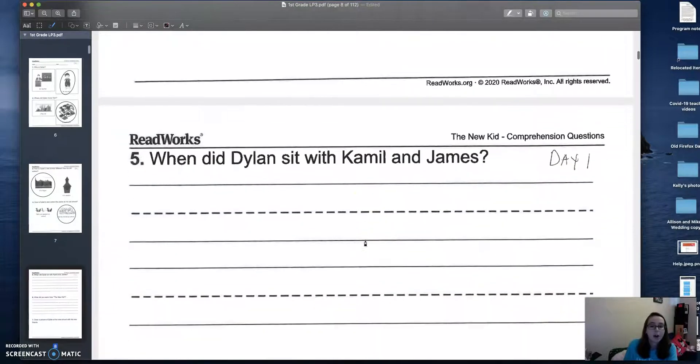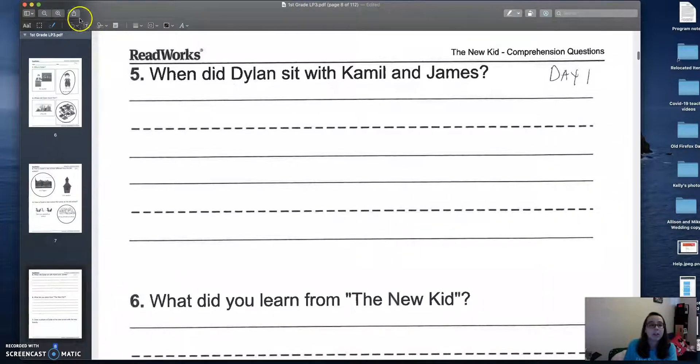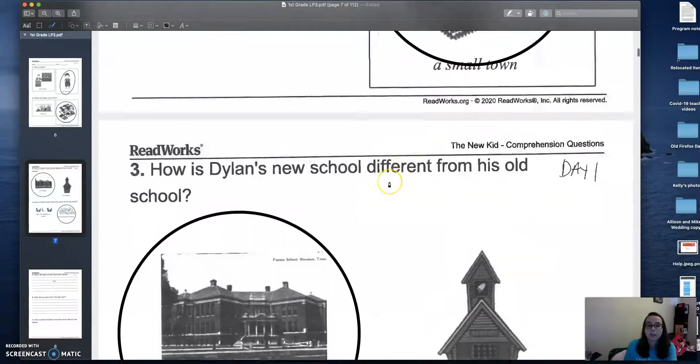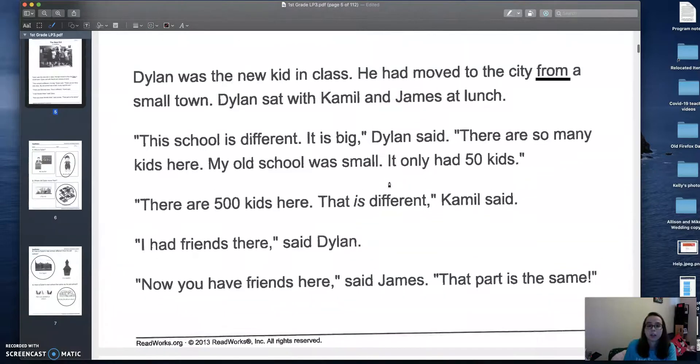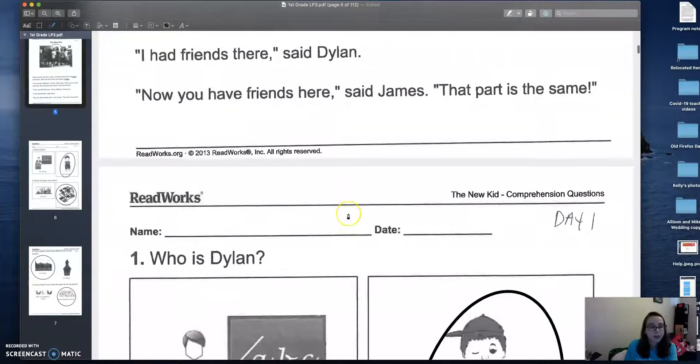Now we are going to do our writing for the day. It says, when did Dylan sit with Camille and James? When do we sit with our friends? Let's go back to the story and see. Dylan sat with Camille and James at lunch. Good.